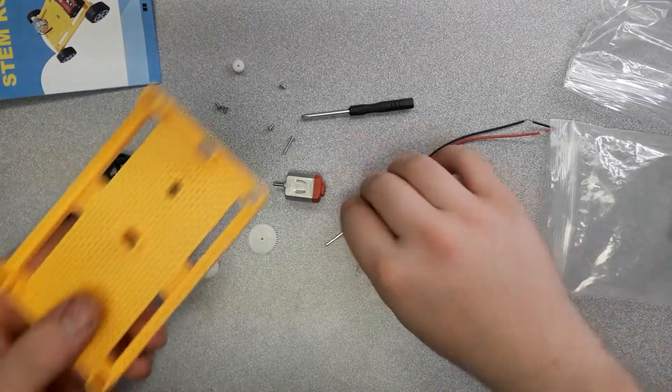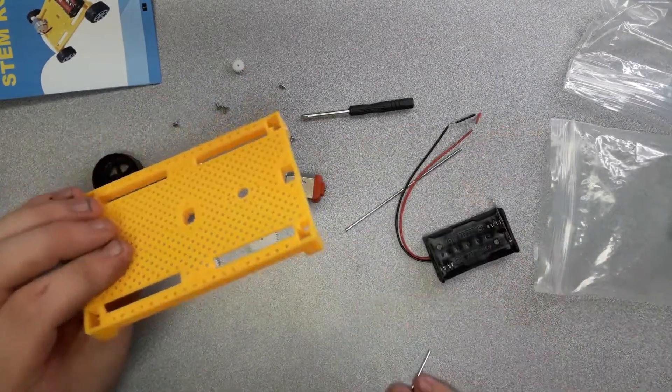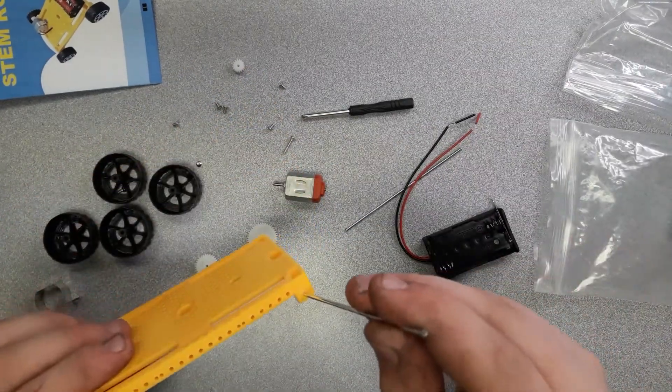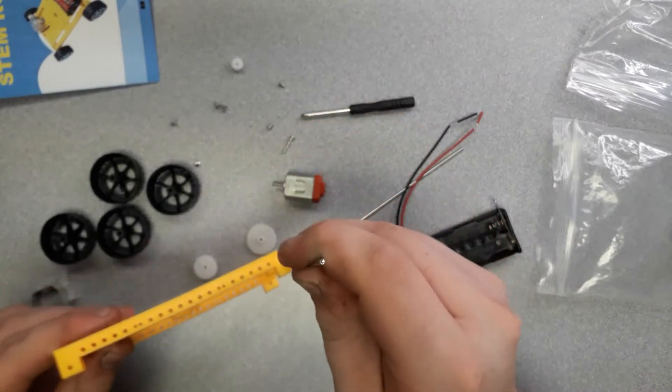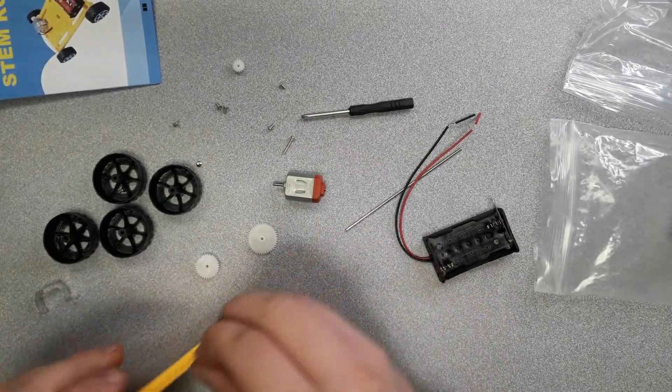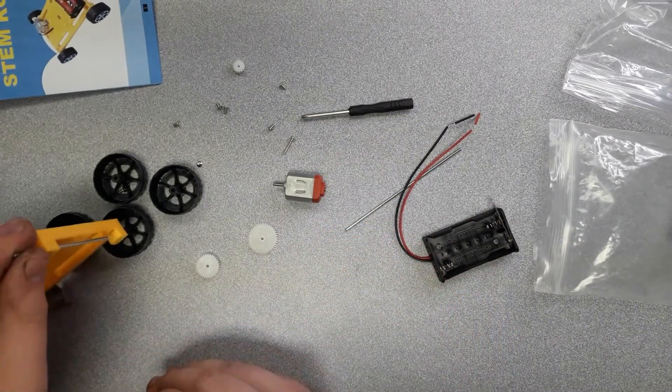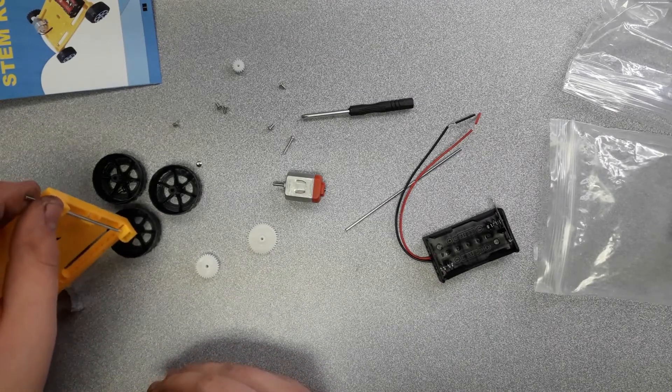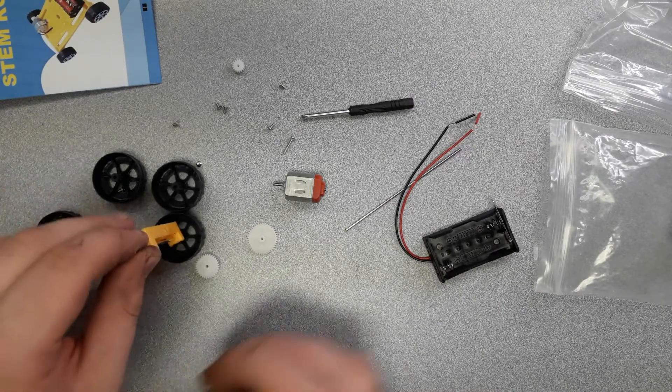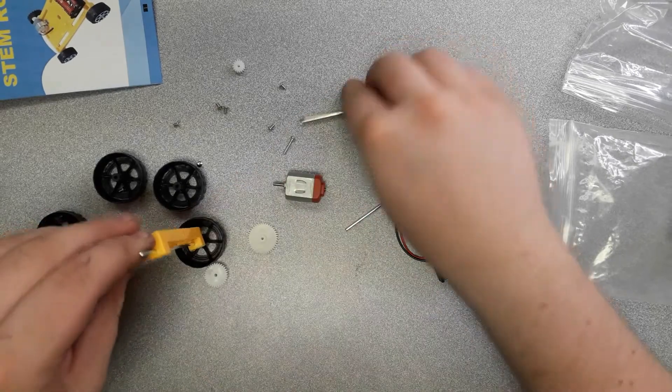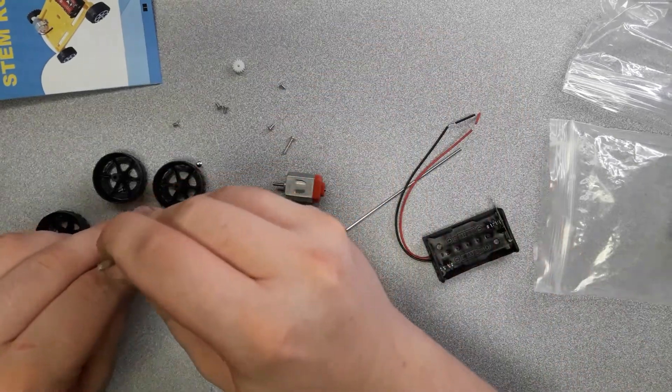So you're going to want to take your board here and put on the back axle. And just sit on one wheel, just so it holds itself on there easily. You can use the back of the screwdriver to push it down if you need to.